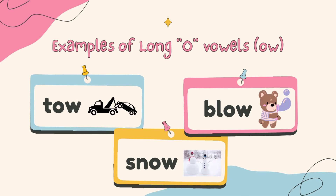Next, we have the O and W letters together, but again the letter at the back is very quiet. So you just say O. T, O, W — tow. B, L, O, W — blow. S, N, O, W — snow.